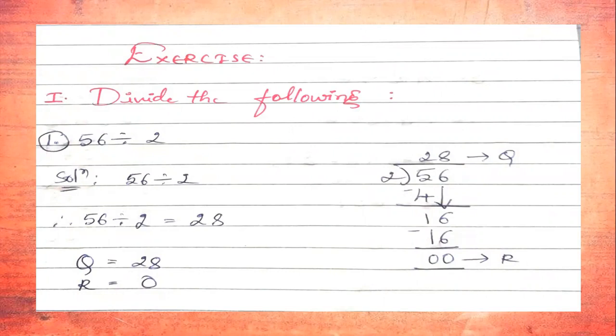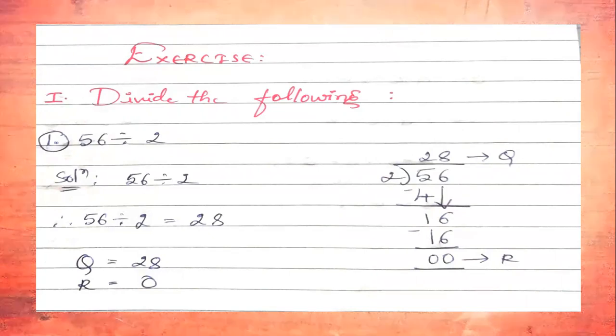The first question says: divide the following. Here a number is given and we have to divide, then write the quotient and remainder. The given number is 56 divided by 2. We write the solution: 56 divided by 2. The division is shown in the rough column to the right side. Here 2 is the divisor, 56 is the dividend, and we have to find the quotient and remainder.